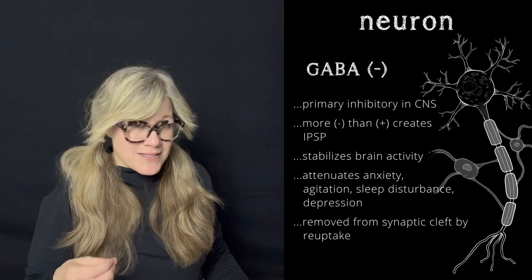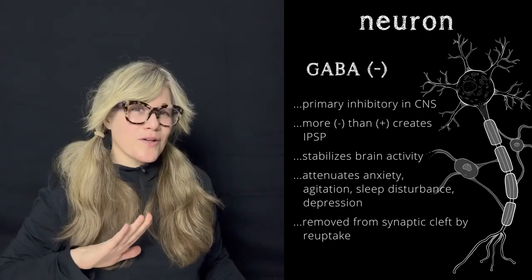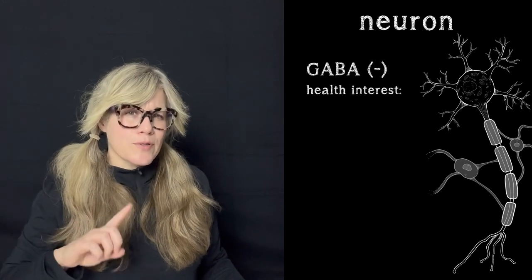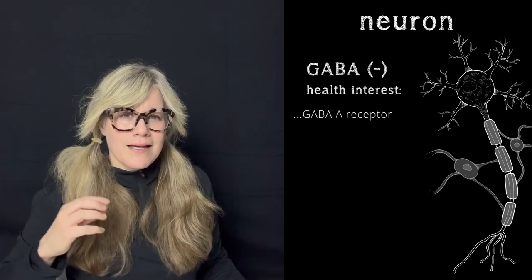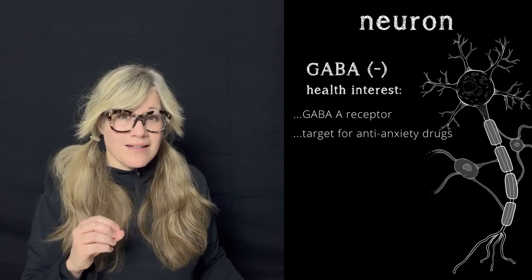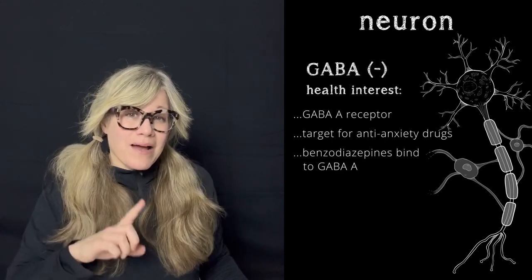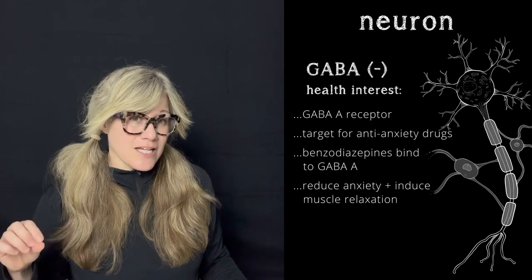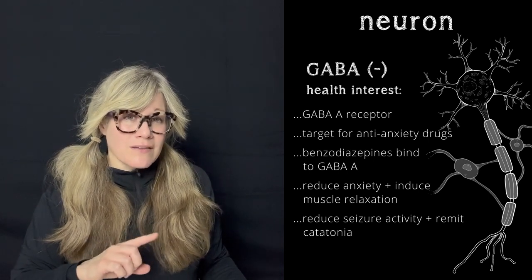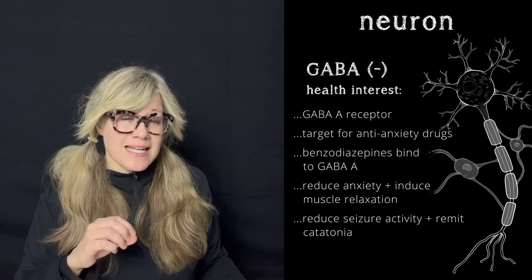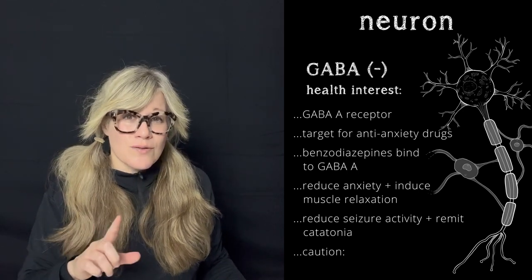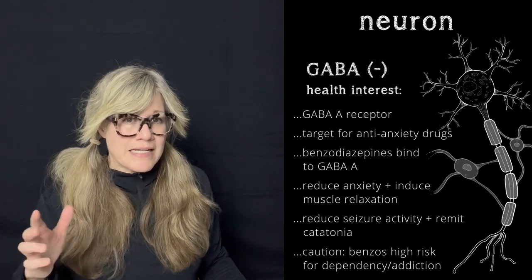GABA is removed from the synaptic cleft by reuptake transporters. Of note in health and wellness discussions, GABA also has several types of receptors at the postsynaptic membrane. A particularly important one, cleverly named GABA-A, is quite the target for numerous anxiolytic drugs — anti-anxiety drugs. One class you may recognize is benzodiazepines. They bind to this receptor to reduce anxiety and induce muscle relaxation. They've also been used to reduce seizure activity and to remit catatonia. They do this by unlocking GABA-A receptors to regulate any deficiencies in GABAergic function. A cautionary note about benzodiazepines: prolonged use places the user at very high risk for developing dependency, or worse, an addiction to them. Dependency can kick in if taken longer than two weeks.